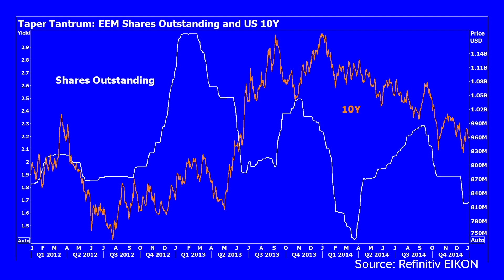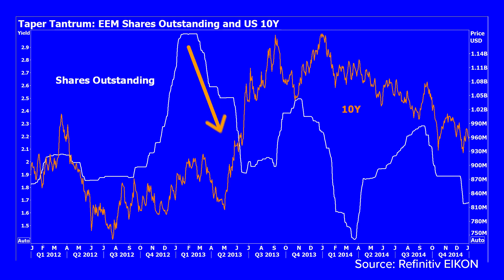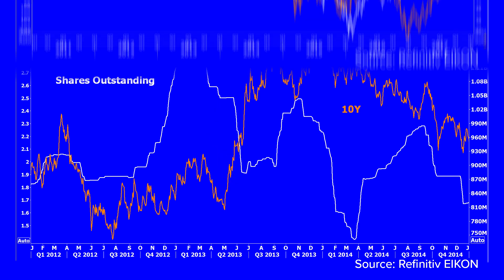Primarily, the Fed will be keen to avoid a repeat of the 2013 taper tantrum, where the market reacted negatively to the announcement to reduce bond purchases. US 10-year bond yields rose 140 basis points in four months. The US equity market shrugged this off, but the impact saw a pickup in outflows from emerging markets.